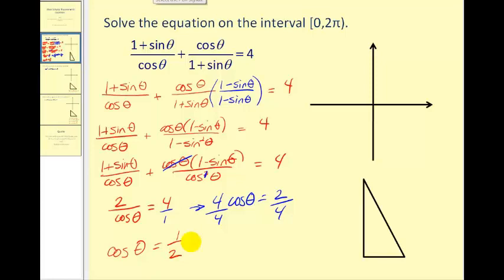Having a cosine function value of one-half should remind you of a 30, 60, 90 right triangle, where the cosine of a 60 degree angle is equal to one-half. That tells us our reference angle will be 60 degrees.